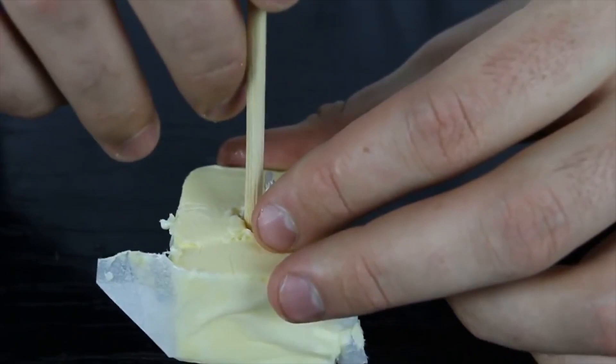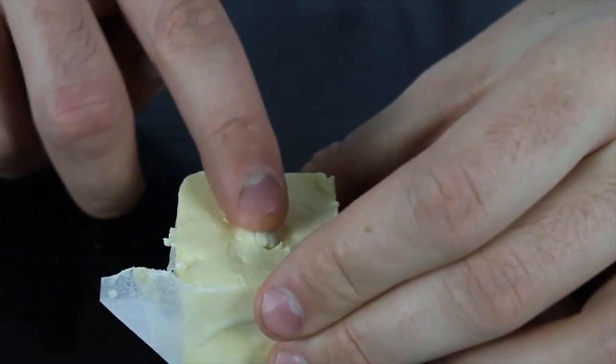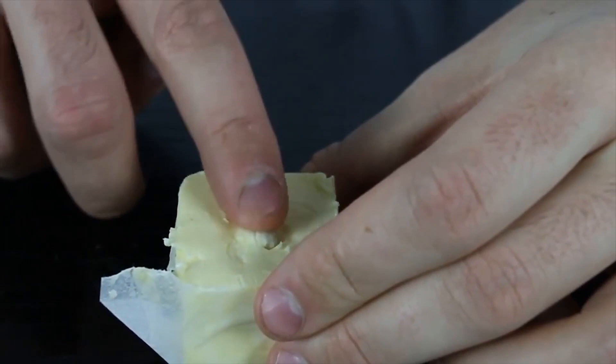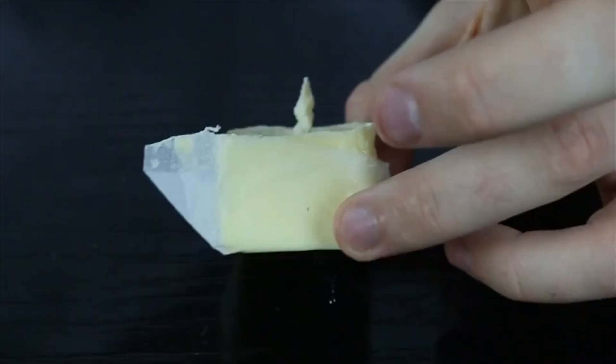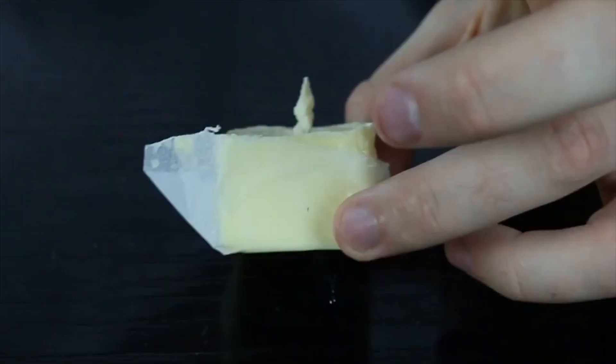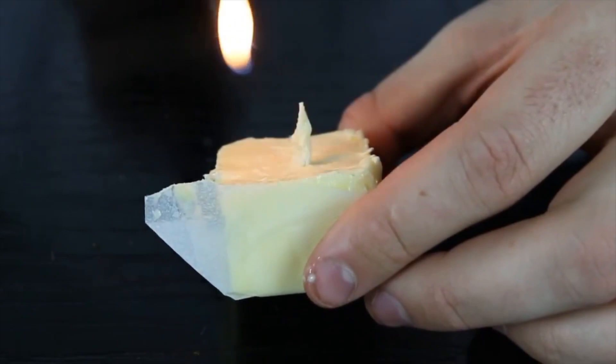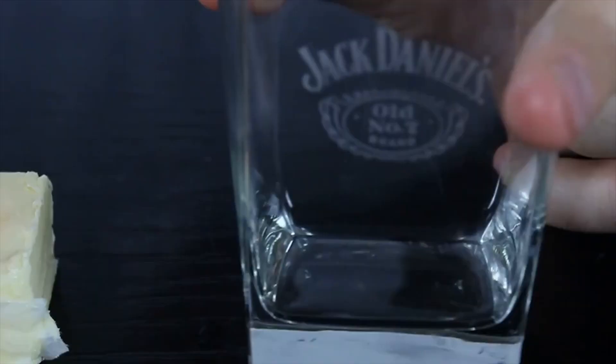Then you wanna fold it like that, measure it so it's a little bit higher than the end of the butter. Place it over the hole and push it with a skewer all the way down. You can fix it with your fingers. Before you light it up, you're gonna rub it on butter. Very simple and very useful thing.